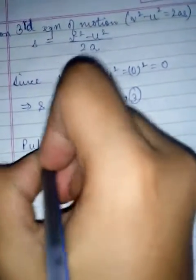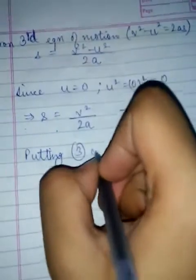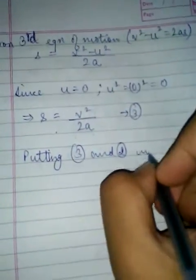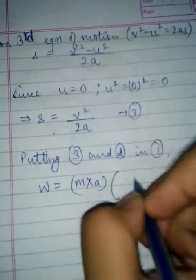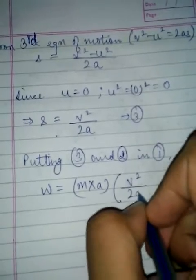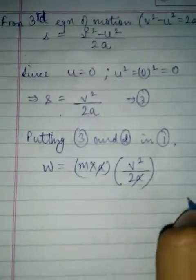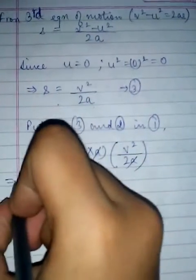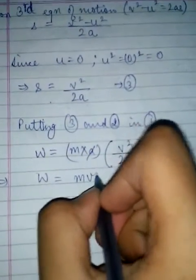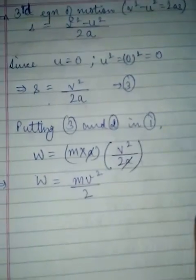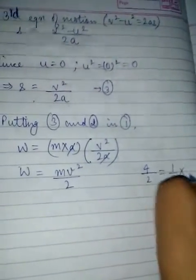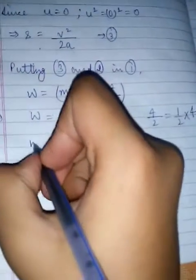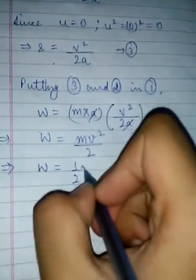Putting equations 3 and 2 in 1, we have that W = (M × A) × (V²/2A). A and A cancel out with each other. We would be left with W = MV²/2. Now we can write this as W = ½MV².